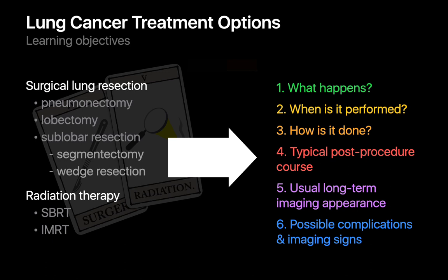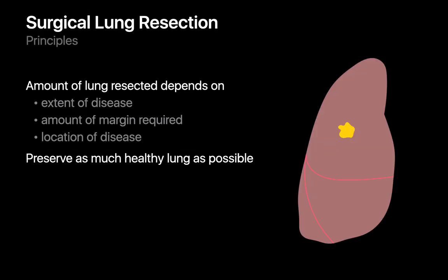Before we start, we'll spend a minute or two to get everyone on the same page with regards to surgical lung resection in general. The goal of surgical lung resection is to give a patient their best chance at a cure by attempting to completely remove lung cancer from the body. The amount of lung cancer that needs to be resected depends on factors such as how big the cancer is and how much tissue around it needs to be removed to ensure nothing's been left behind.